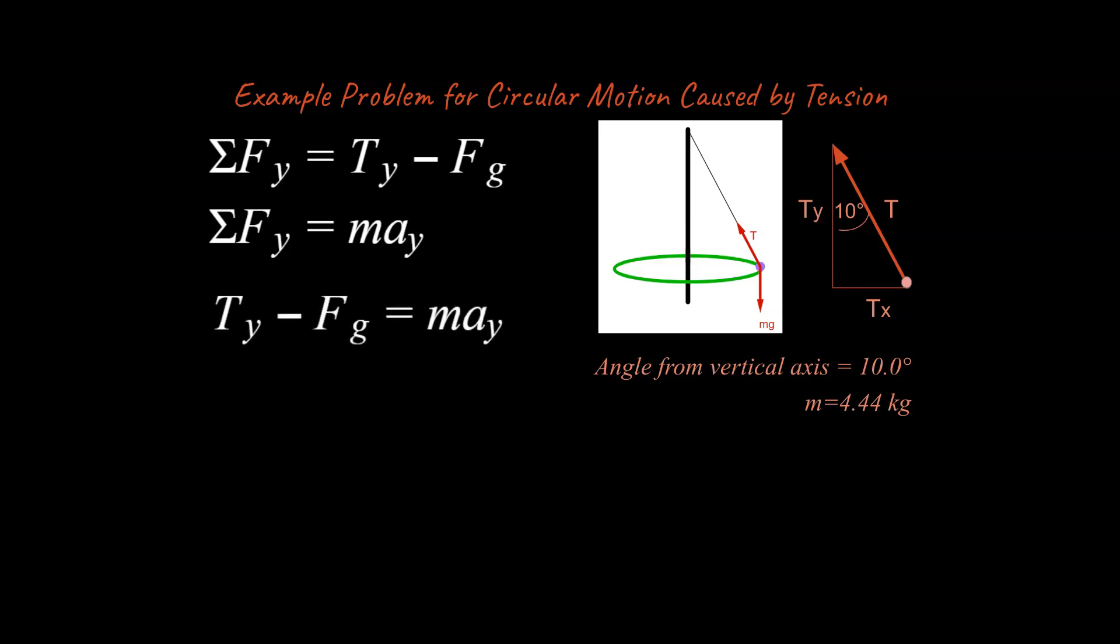The next step for the sum of the forces strategy is just to use Newton's second law. So sum of the forces is equal to mass times acceleration in that axis, which is y. Then we set them equal to each other and we ask ourselves, is this something or is this nothing? And in this case, this is nothing. Meaning this object is not accelerating up in the upwards direction or down in the negative direction. It's not moving in the y at all. So that's going to be zero. And if that acceleration is zero, what happens to this whole term right here? It becomes zero.